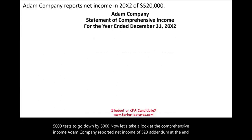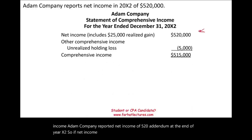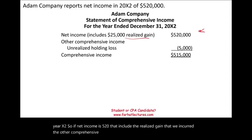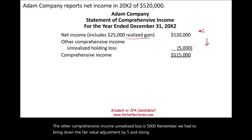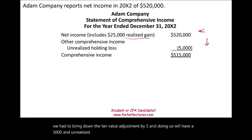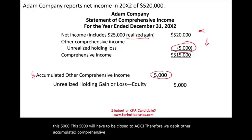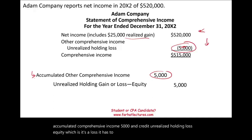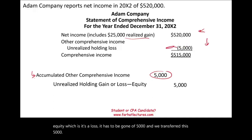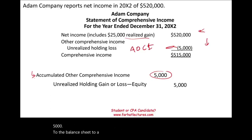Adam Company reports net income of $520,000 in year X2, which includes the realized gain on the Lenovo sale. Other comprehensive income shows an unrealized holding loss of $5,000, because we had to reduce the fair value adjustment by $5,000. This $5,000 unrealized holding loss closes to AOCI: debit Accumulated Other Comprehensive Income $5,000, credit Unrealized Holding Loss — Equity $5,000, transferring it to the balance sheet.